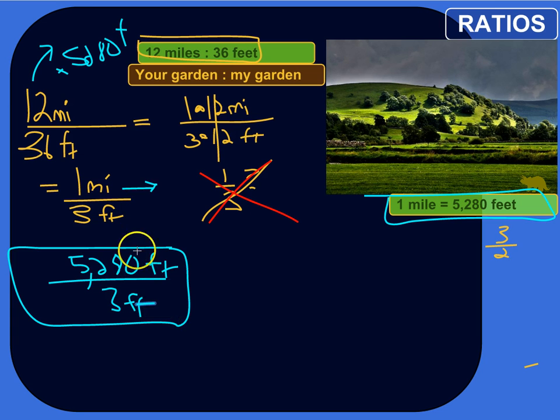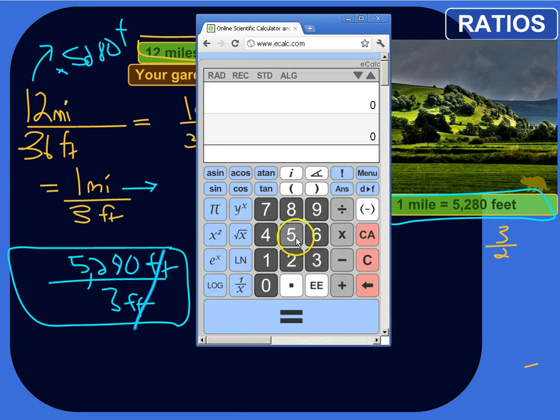So here's our ratio with the same unit. A lot different, right? This is the ratio of the length of your garden to mine, 5,280 feet versus 3 feet. So that gives a much different picture. We're not trying to say that your garden is one-third the size of mine. It's actually, we could turn this into a decimal now. So feet and feet cancel out. 5,280 divided by 3, let's do that.